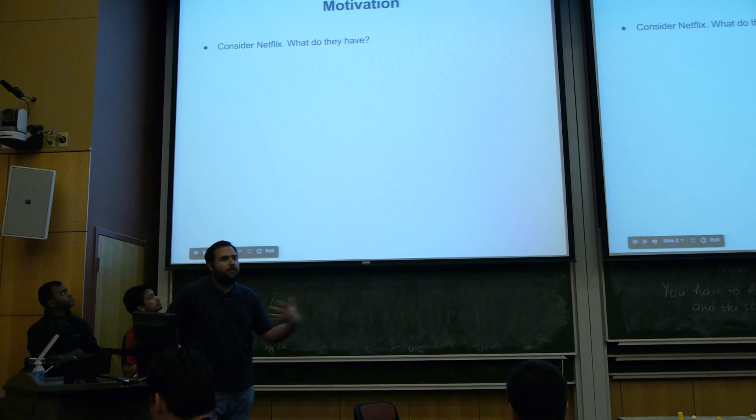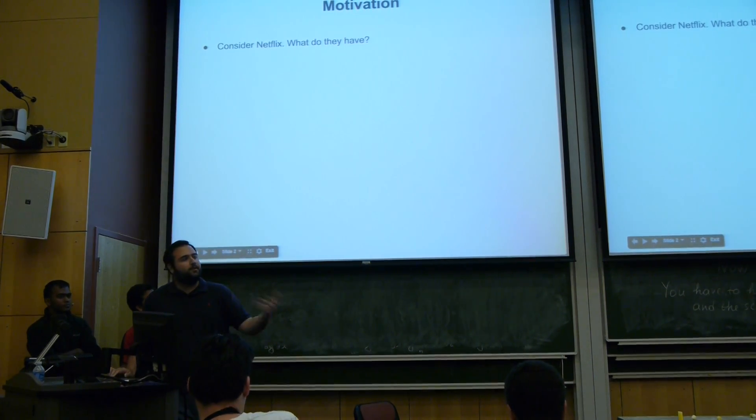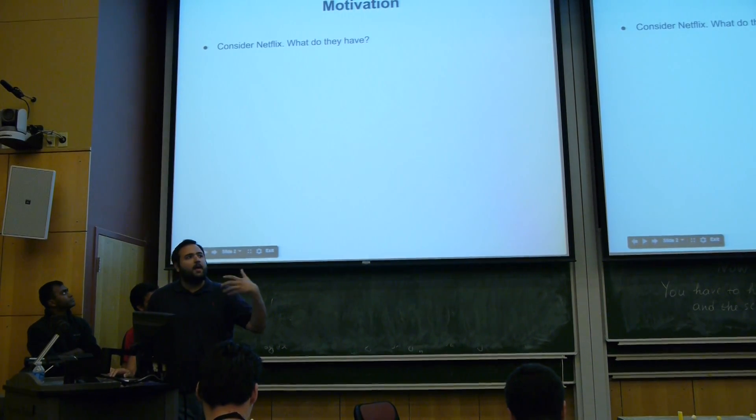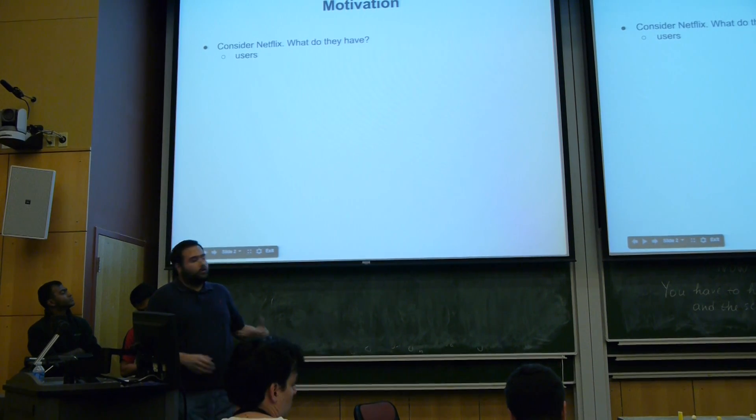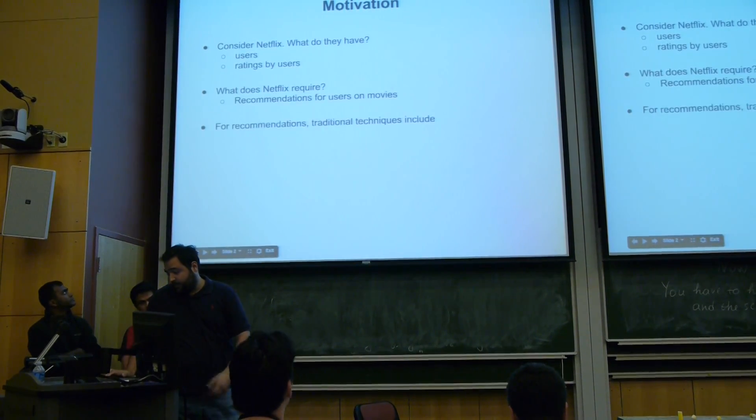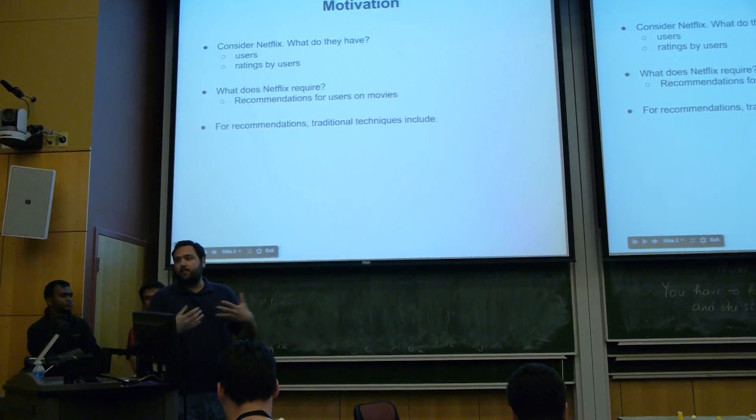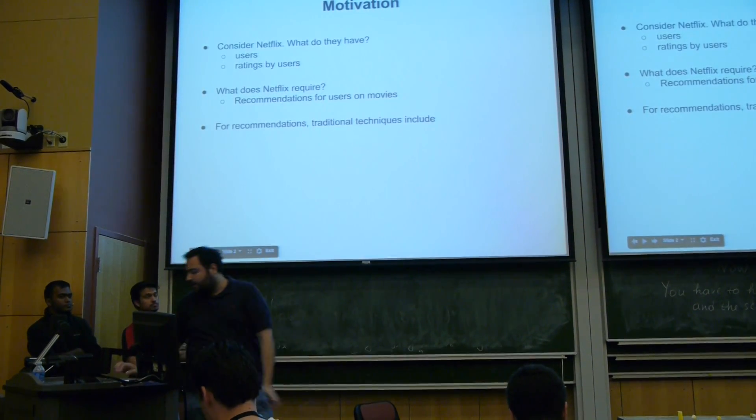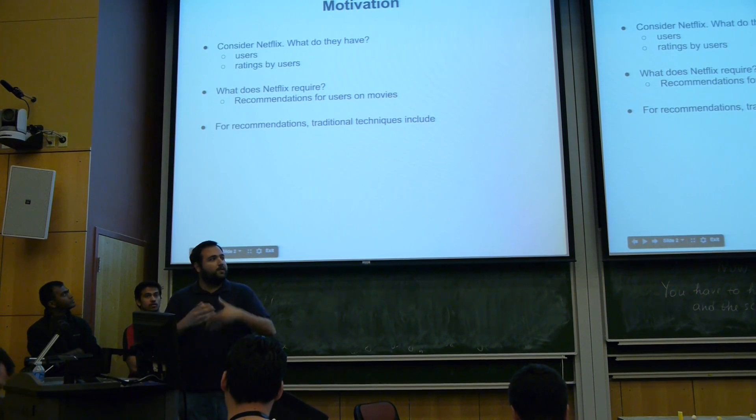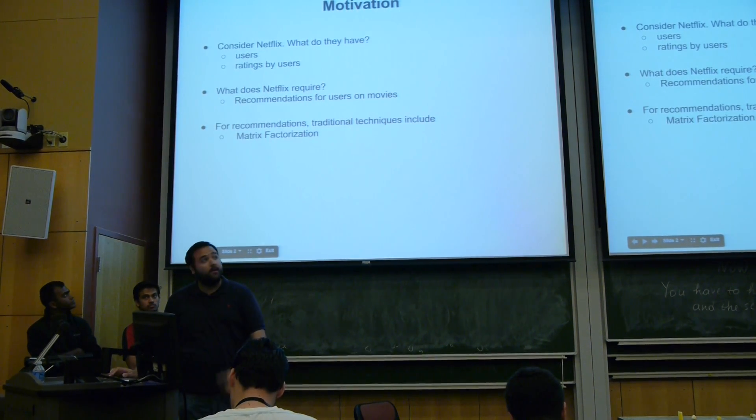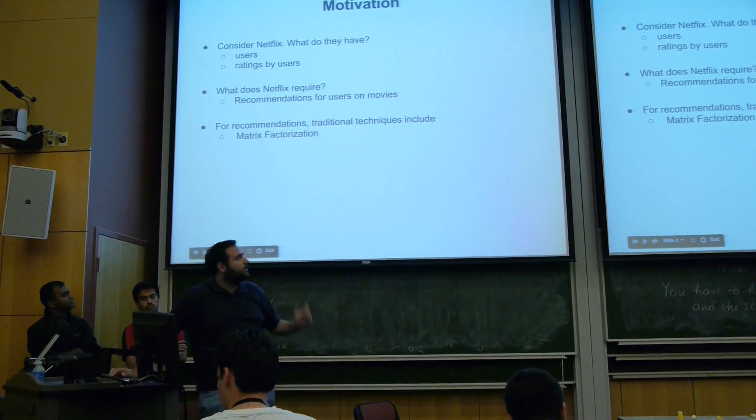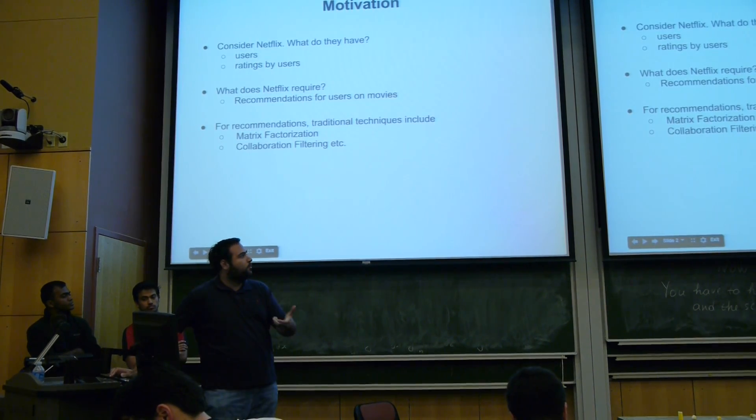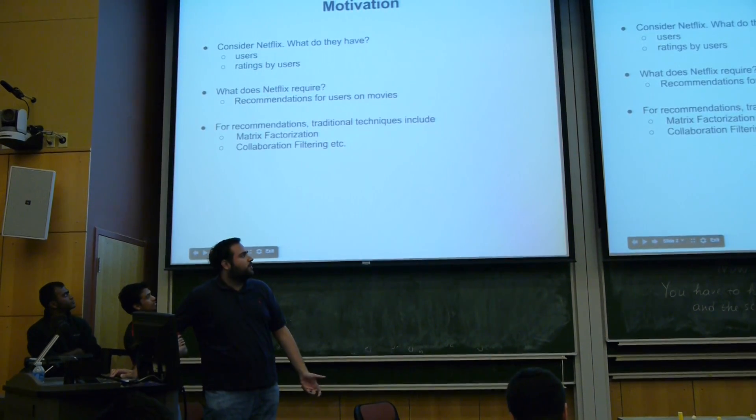Let's say we are Netflix and we have movies, we have users. These users look at movies and they rate them if they like them or not. What do we want to do? We want to recommend movies to users according to what they've seen already, what their friends see, and how movies are similar to each other. There has been work on matrix factorization and collaborative filtering that works on this matrix completion problem.